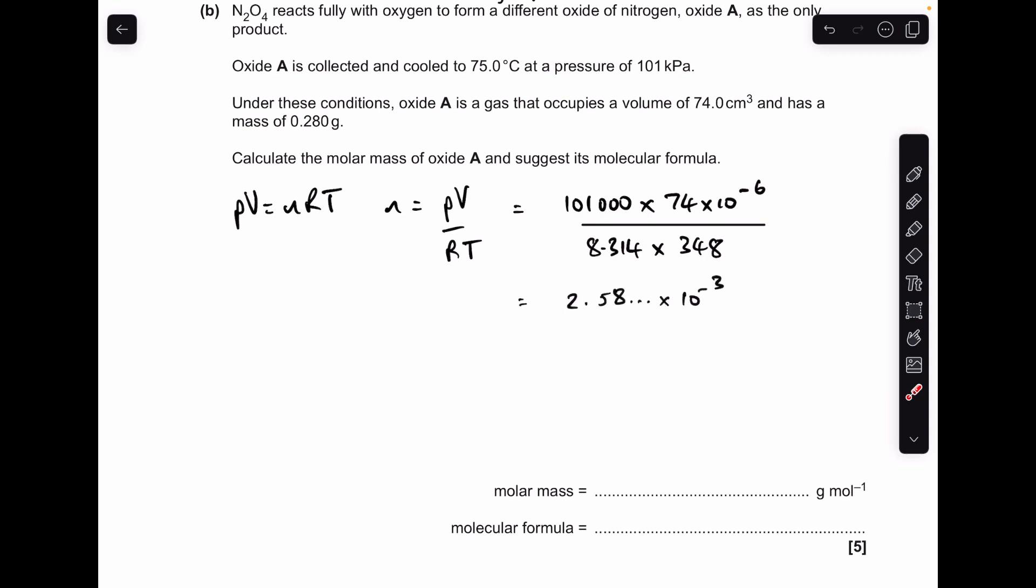So that's giving us a moles value of 2.58. The dot dot dot just means I'm keeping the full number in my calculator times 10 to the minus 3. So we can work out the MR now. Just mass over moles. So you can see the molar mass comes out at 108.